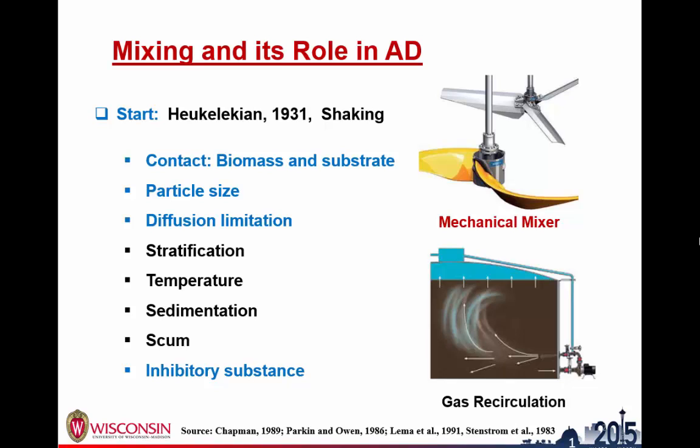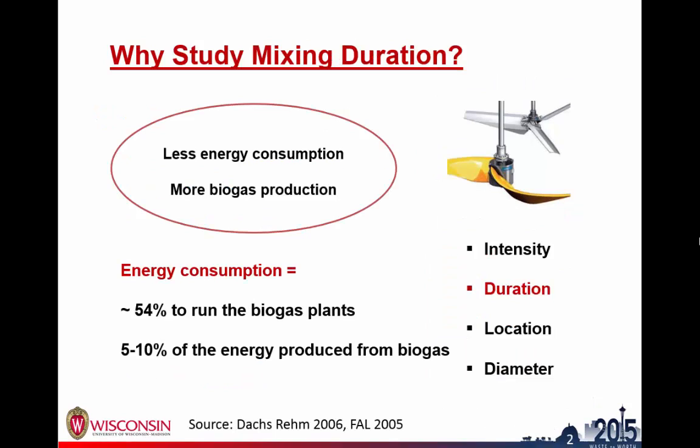Mixing can also prevent sedimentation and formation of scum, and distribute inhibitory substrates. However, the studies on the impact of mixing on gas production are still not clear, because many factors may have an impact — for example, the intensity, which means mixing speed, or the duration, how long you mix per hour or per day, and even the location and diameter of the mixer can impact gas production.